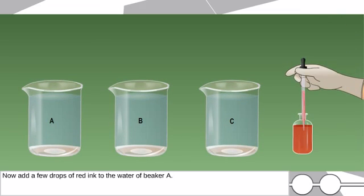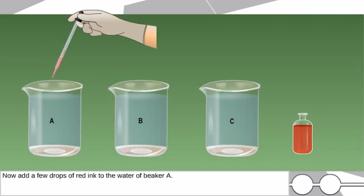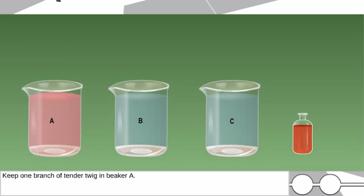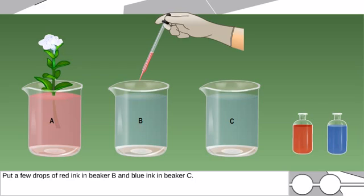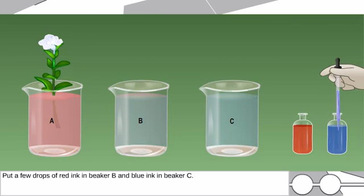Now add a few drops of red ink to the water of beaker A. Keep one branch of tender twig in beaker A. Put a few drops of red ink in beaker B and blue ink in beaker C.